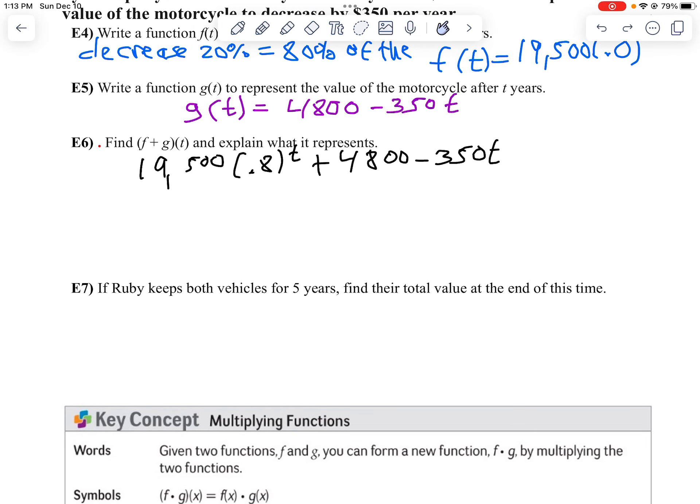So in other words, I'm going to say 19,500 times 0.8 to the fifth power plus 4,800 minus 350 times 5. And now we'll just use our calculator to find that. I want to use a scientific on this one because I'm not going to do any graphing. And I got to remember where my calculator is, here it is.